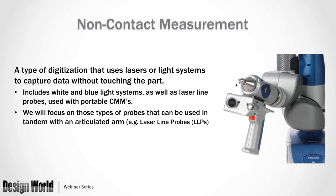What is non-contact measurement? As the name suggests, it doesn't have to be touching the surface. These generally include various light systems or laser systems — blue light, white light, laser interferometers. For this presentation, however, I'm just going to cover those which relate to articulated arm CMMs, which include laser probes and, more specifically, laser line probes, abbreviated LLP.